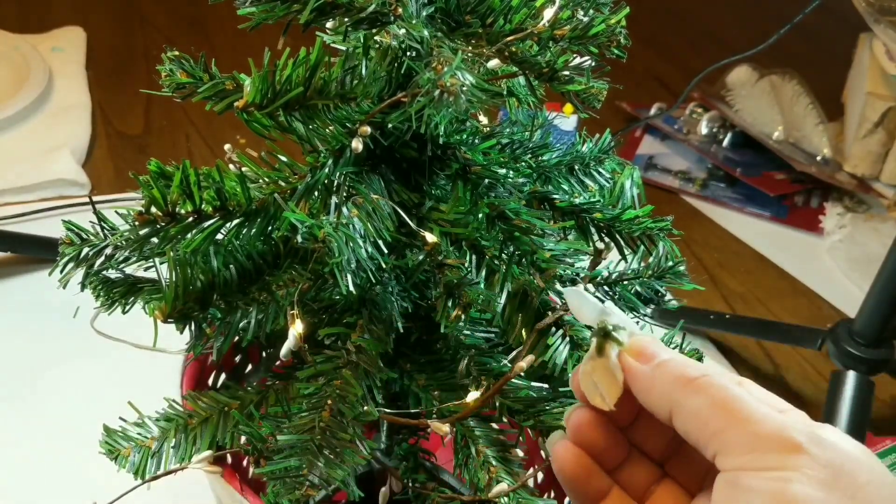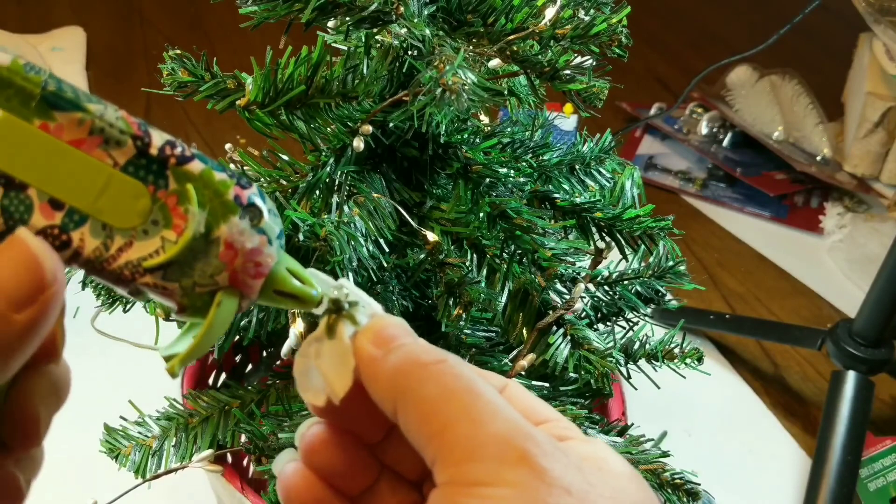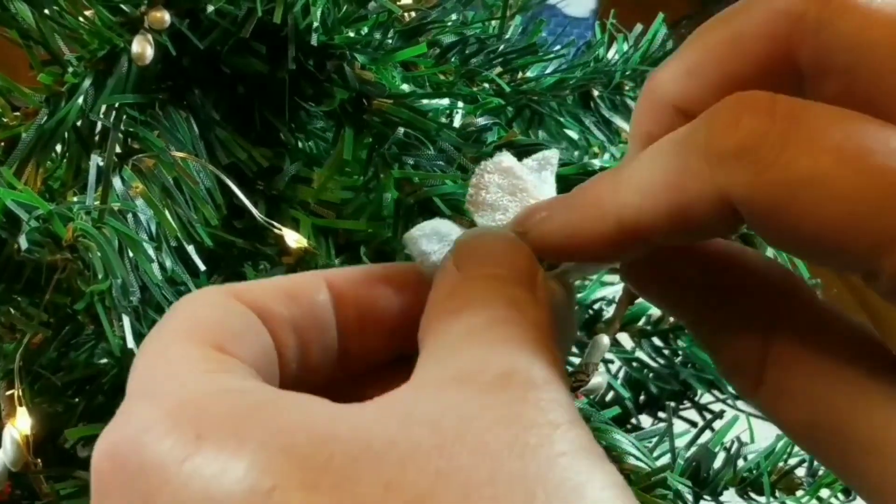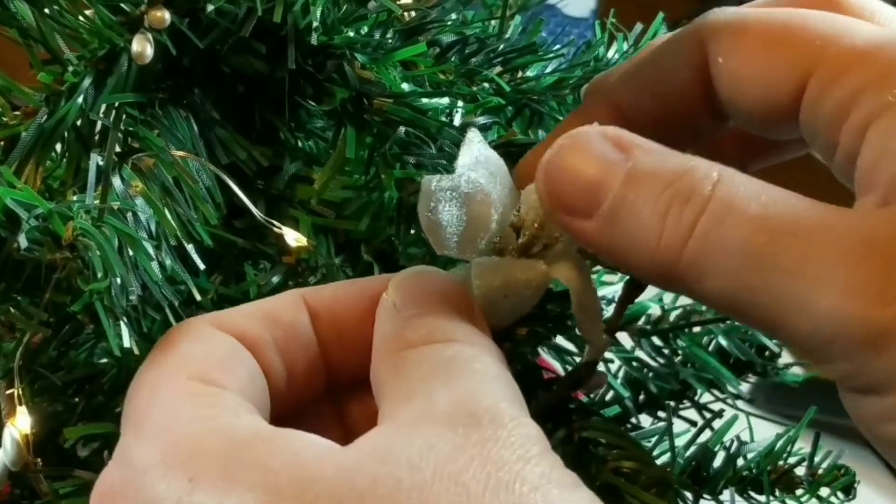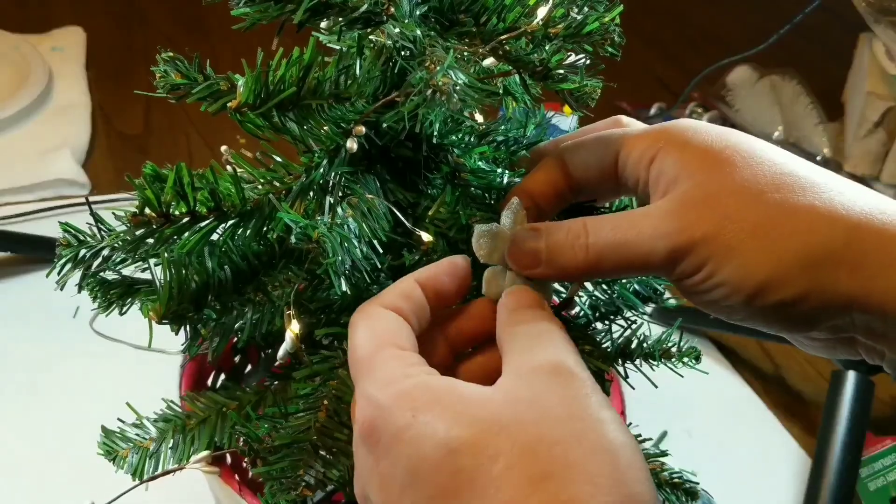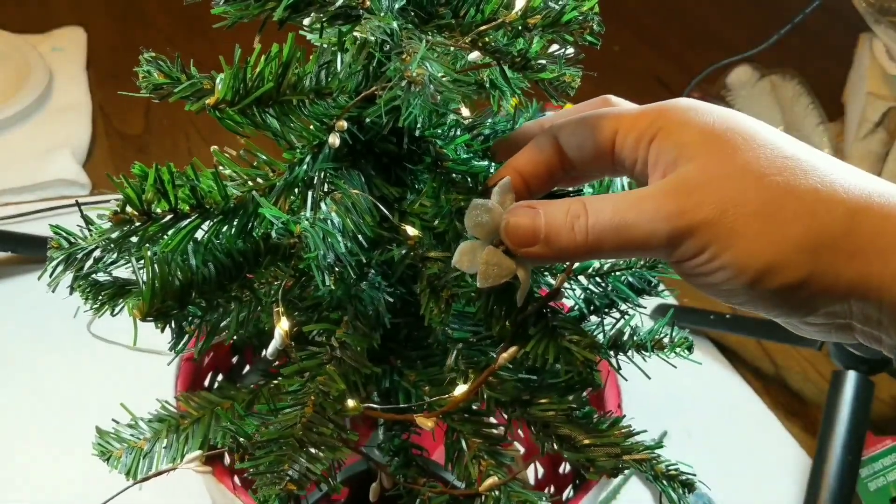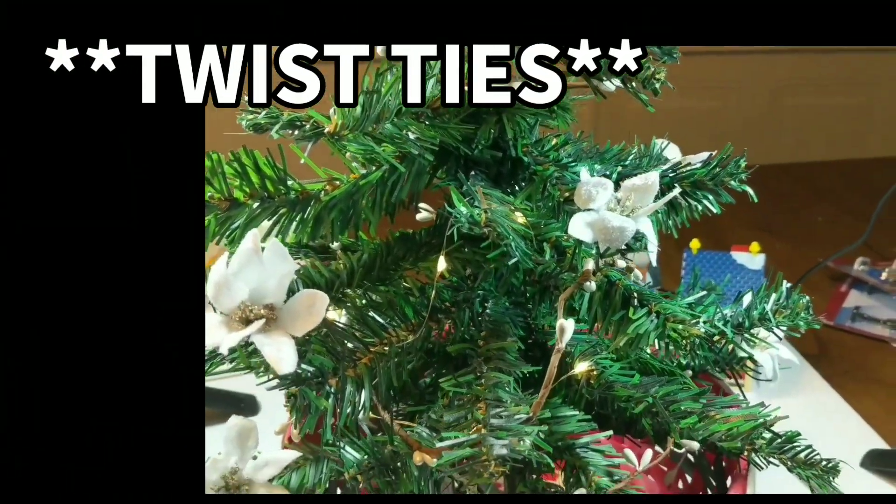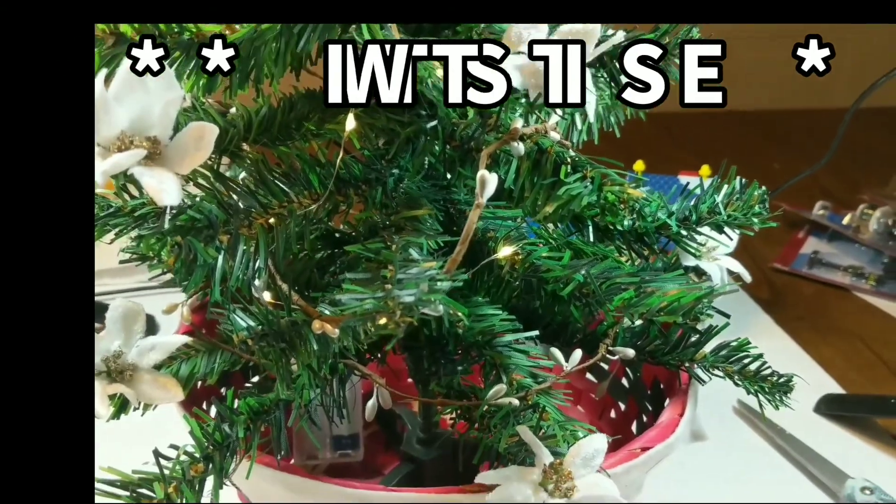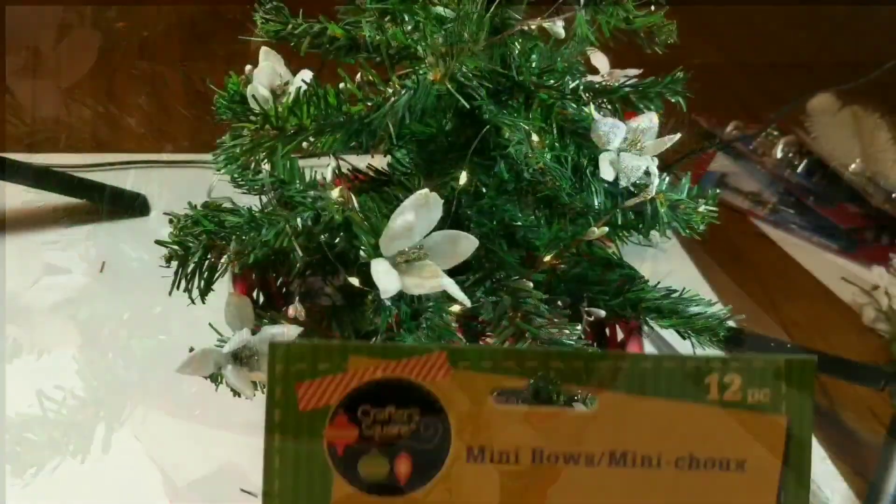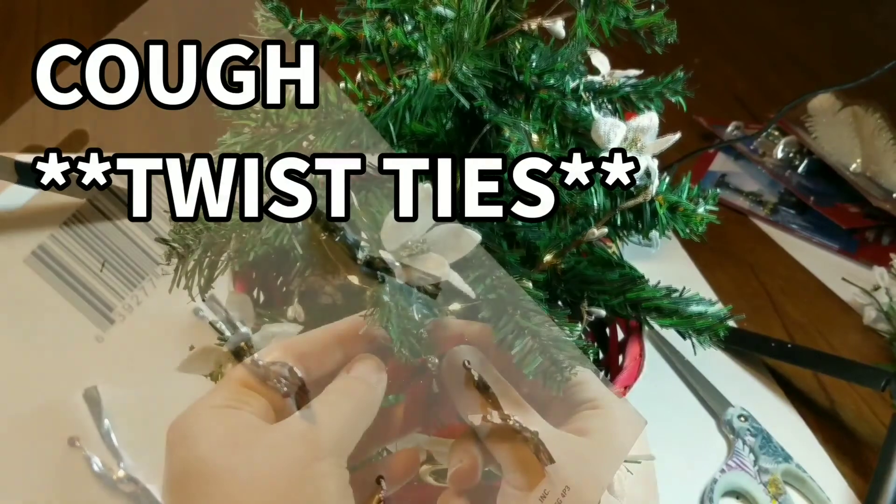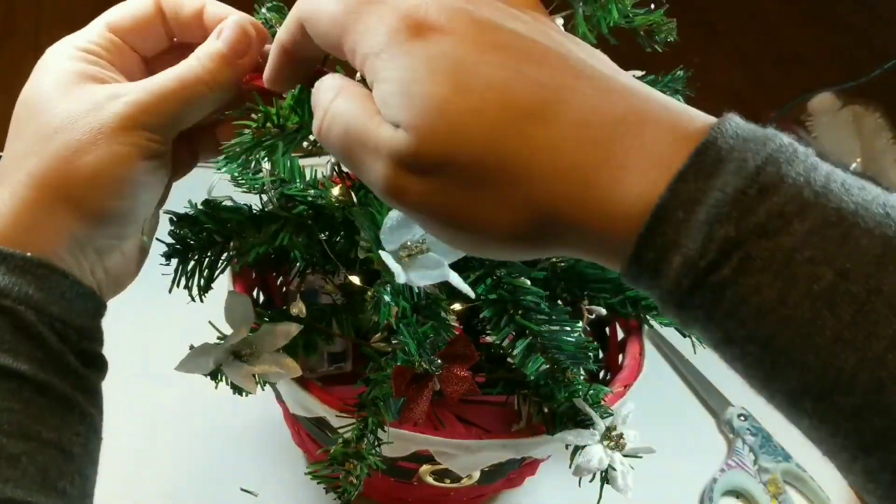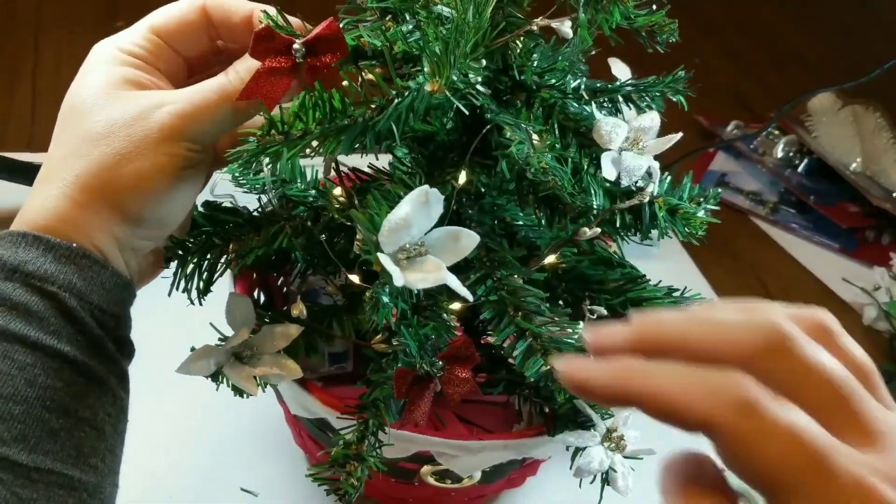If you don't want to glue the flowers, a little tip that you could use is the little things that you use to tie off your trash bags. You could glue them to the back of these flowers and use them to wrap around the branches.